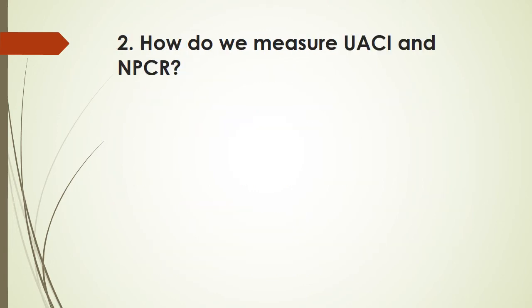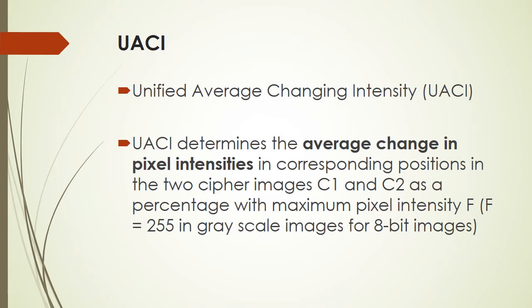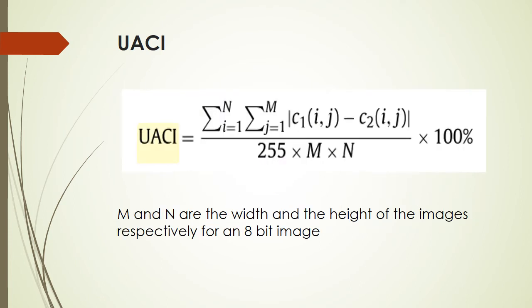How do we measure UACI and NPCR? UACI gives the average change in pixel intensities in corresponding positions in both images c1 and c2, as a percentage of the maximum pixel intensity. In the case of an 8-bit image, the maximum pixel intensity is 255. The expression for measuring UACI is given here, where m and n are the width and height of the images respectively.